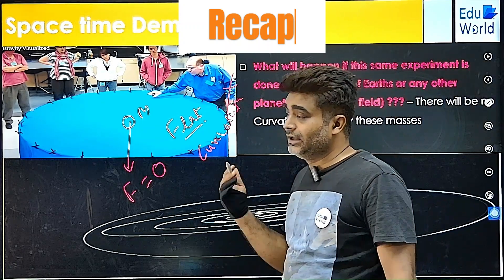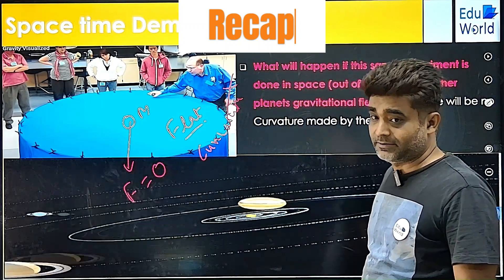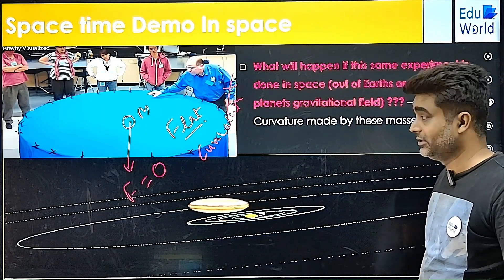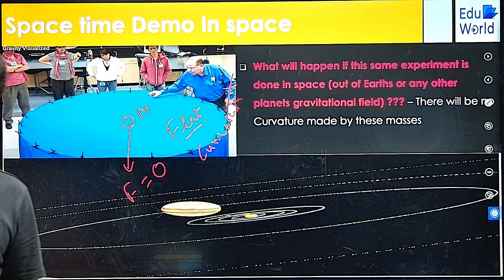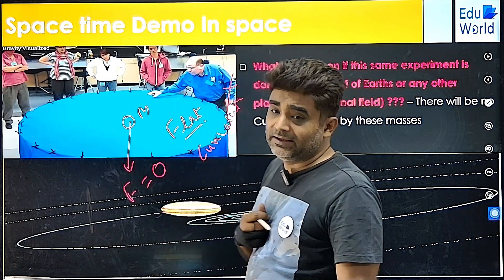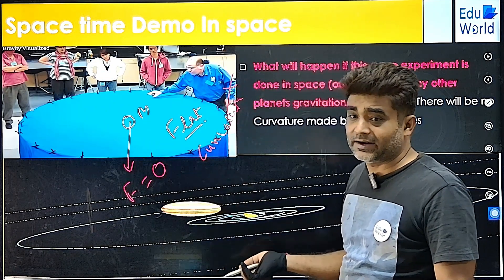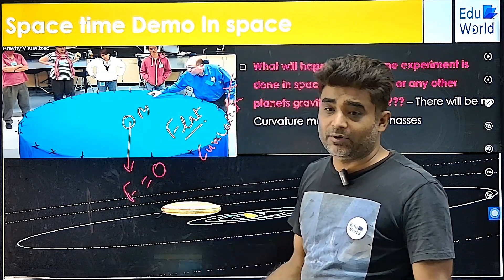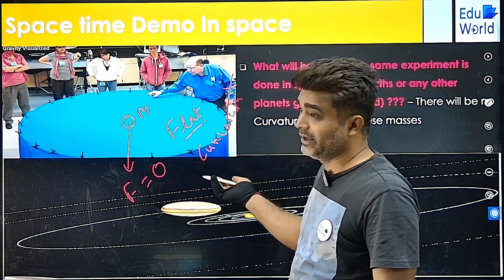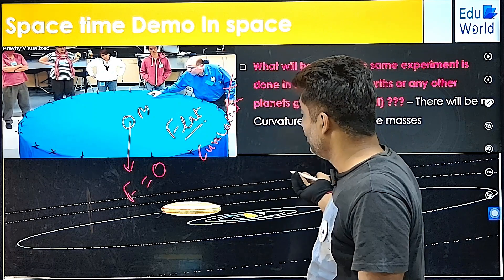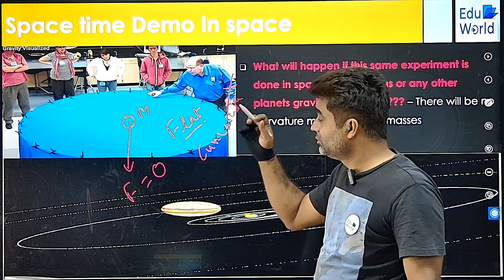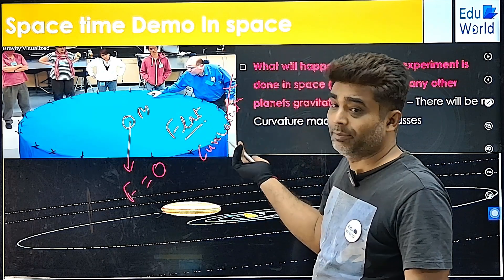How do you explain gravity as a space-time curvature in space? That's the question. In the last video we saw that if we do this same demonstration in space-time, there will not be any curvature of Earth or any other planet. Thus it will be a weightless mass.